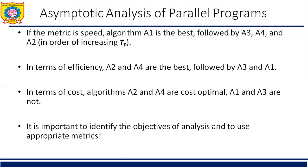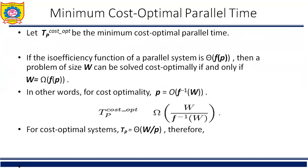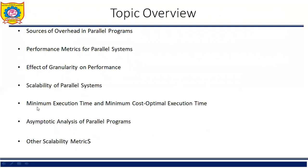Dear students, this is the end of this article on minimum execution time and minimum cost optimal execution time, along with the asymptotic analysis of parallel programs. This concludes article number 5 on minimum execution time, minimum cost optimal time, and article number 6 on asymptotic analysis of parallel programs. In the next video we will see other scalability metrics. Till then, thank you very much. Goodbye.